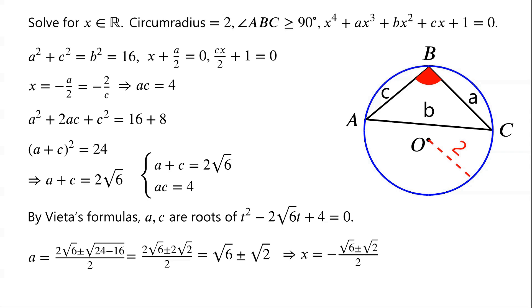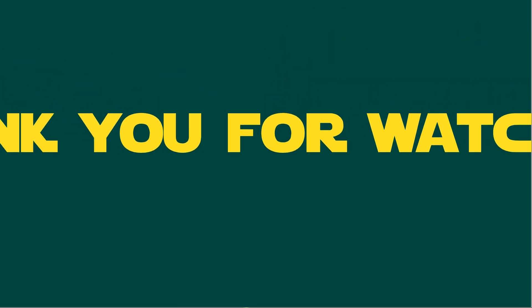So x equals negative (root 6 plus or minus root 2) over 2. There are two solutions.